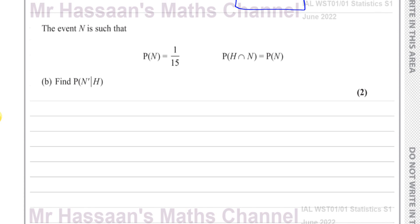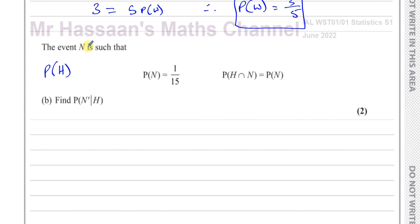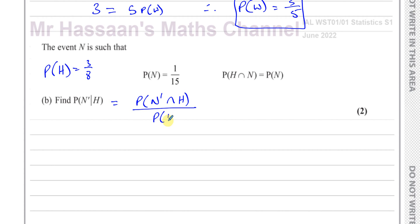Then it says the event N is such that the probability of N is 1 over 15, and the probability of H intersection N is equal to the probability of N. We know the probability of H is 3 eighths. We've got to find the probability of N complement given H. This is the probability of N complement intersection H, divided by the probability of H — you're limiting your solution set to just H and finding the probability of not N within H.